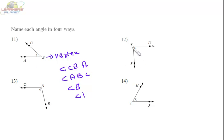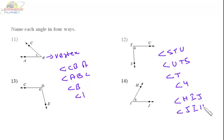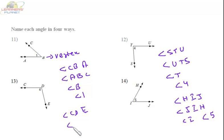Similarly, for the next angle, just put the vertex in the middle. It's angle STU or angle UTS, or angle T, or angle 4. For the next one, it is angle HIJ or angle JIH, angle I, or angle 5. And for the last one it's angle CDE, angle EDC, angle D, or angle 4. I hope it is clear to you.